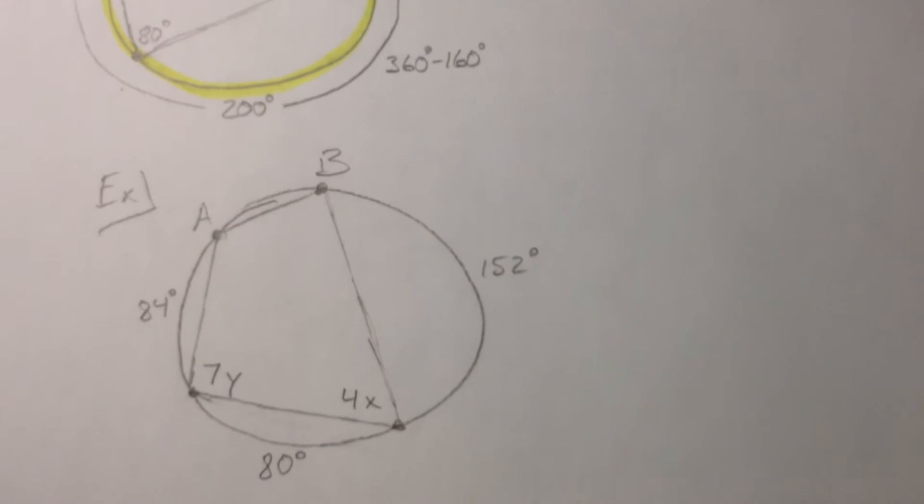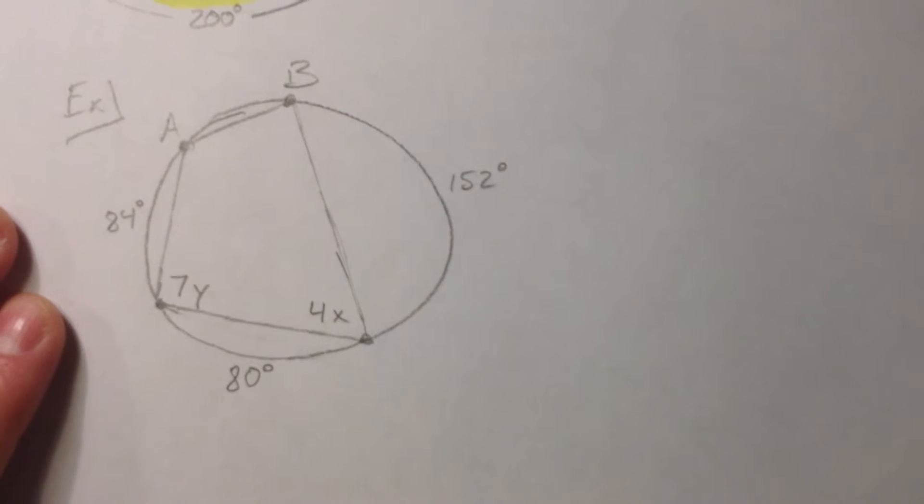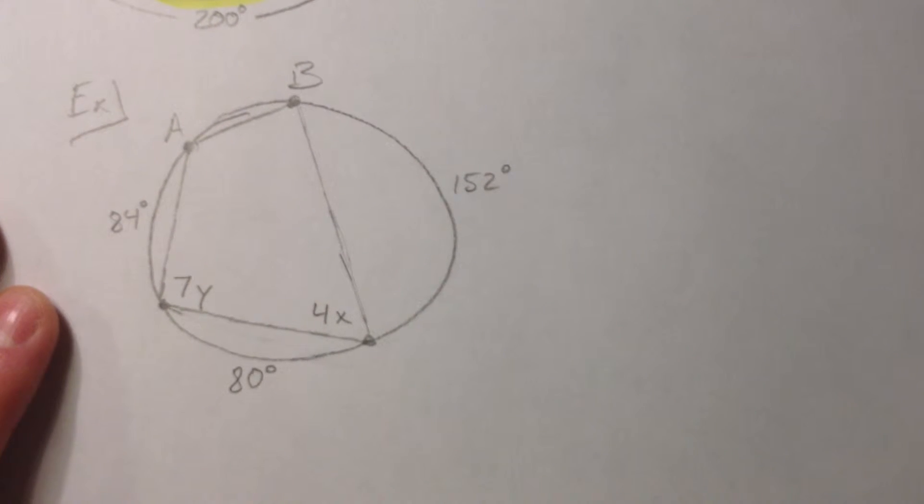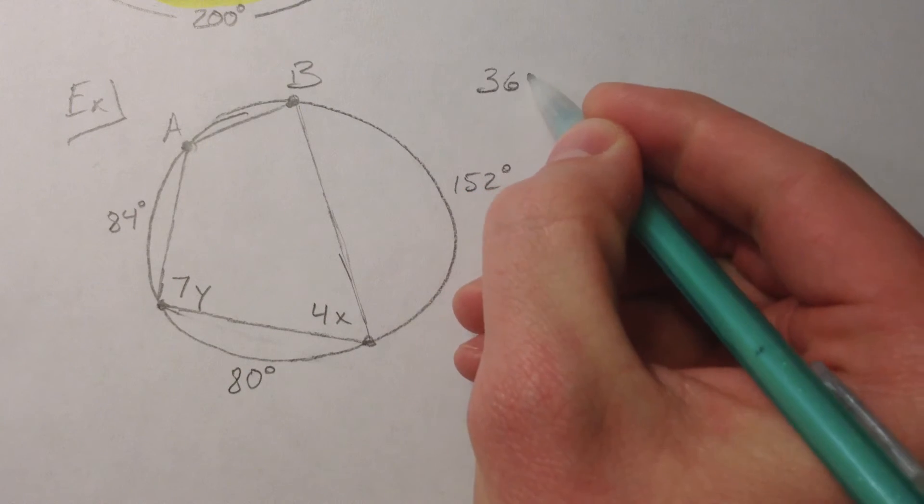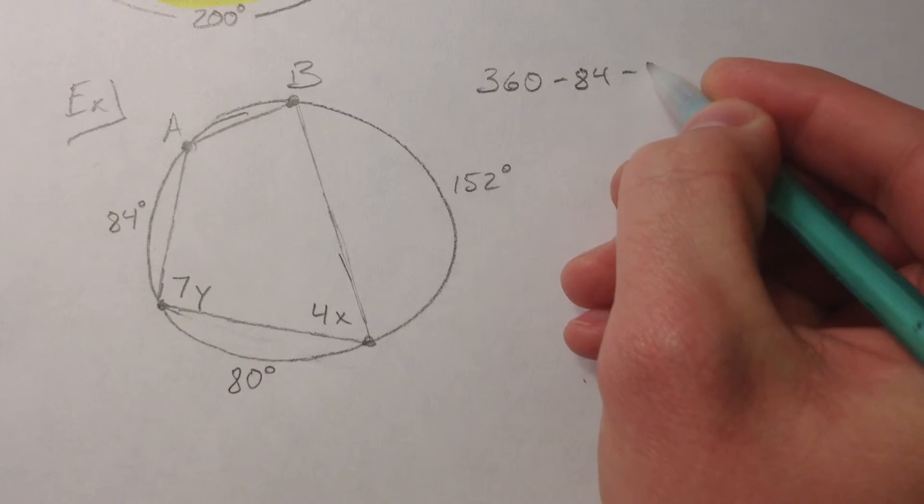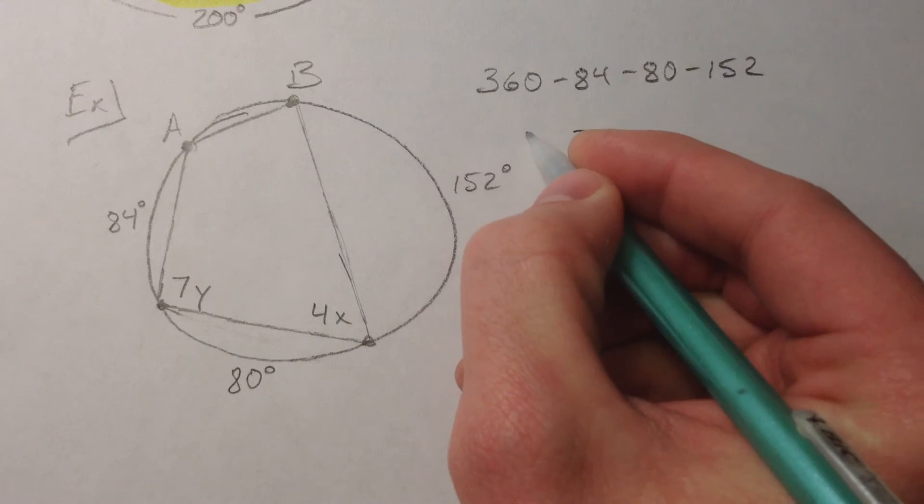And so a specific problem that you might see is if you have this 84 and this arc 80 and this arc 152, we want to find x and y. So how we do that is I want to look at, well, if this is 84 and this is 80 and this is 152, you can find the leftover. 360 minus 84 minus 80 minus 152, you can find the leftover arc AB.